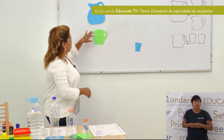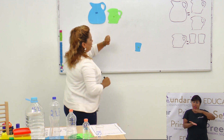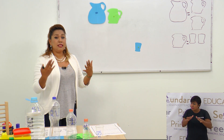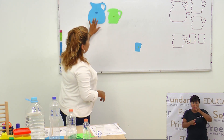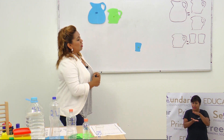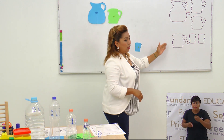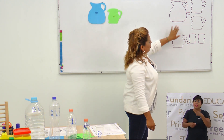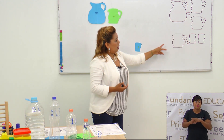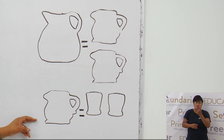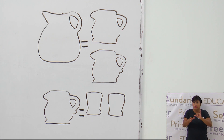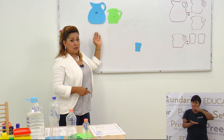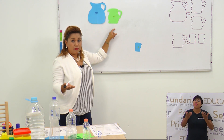¿Qué pasaría si yo tuviera una jarra grande y una mediana? ¿Cuántos vasitos necesitaría para llenar las dos? Vamos a observar a cuánto equivale cada una. A una jarra grande le caben dos medianas, y a una mediana le caben dos vasos. Si necesito dos jarras medianas para llenar la grande y aparte tengo otra mediana más, ¿cuántas medianas serían? Tres.